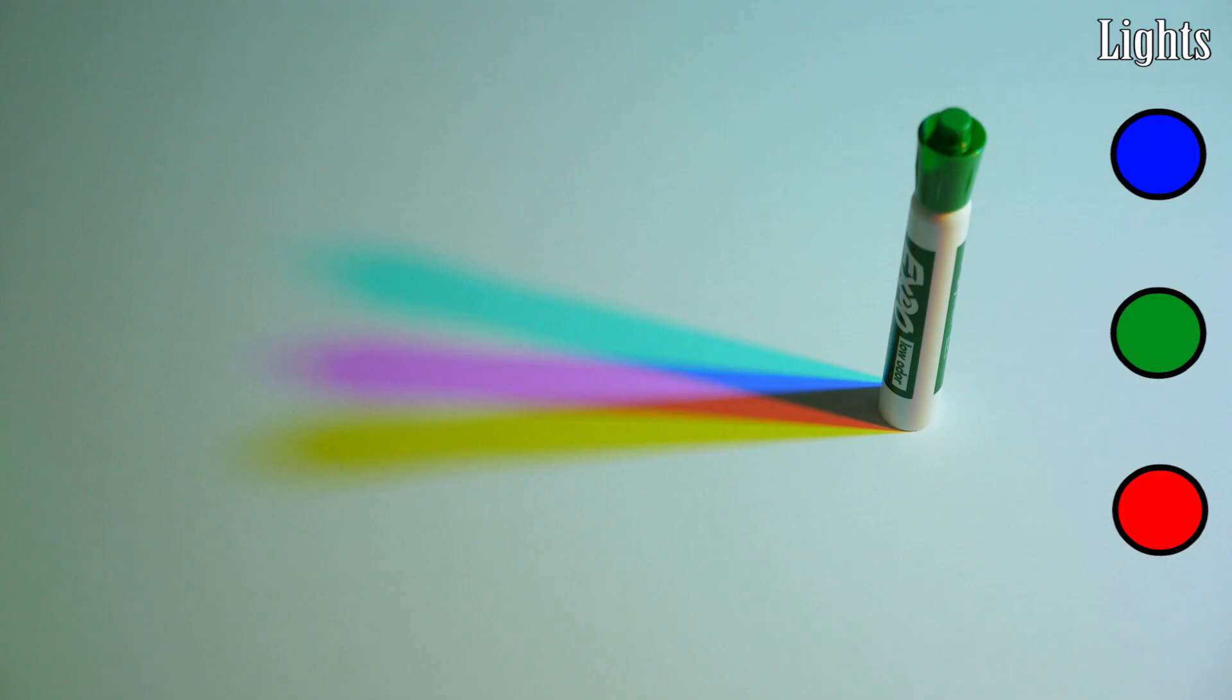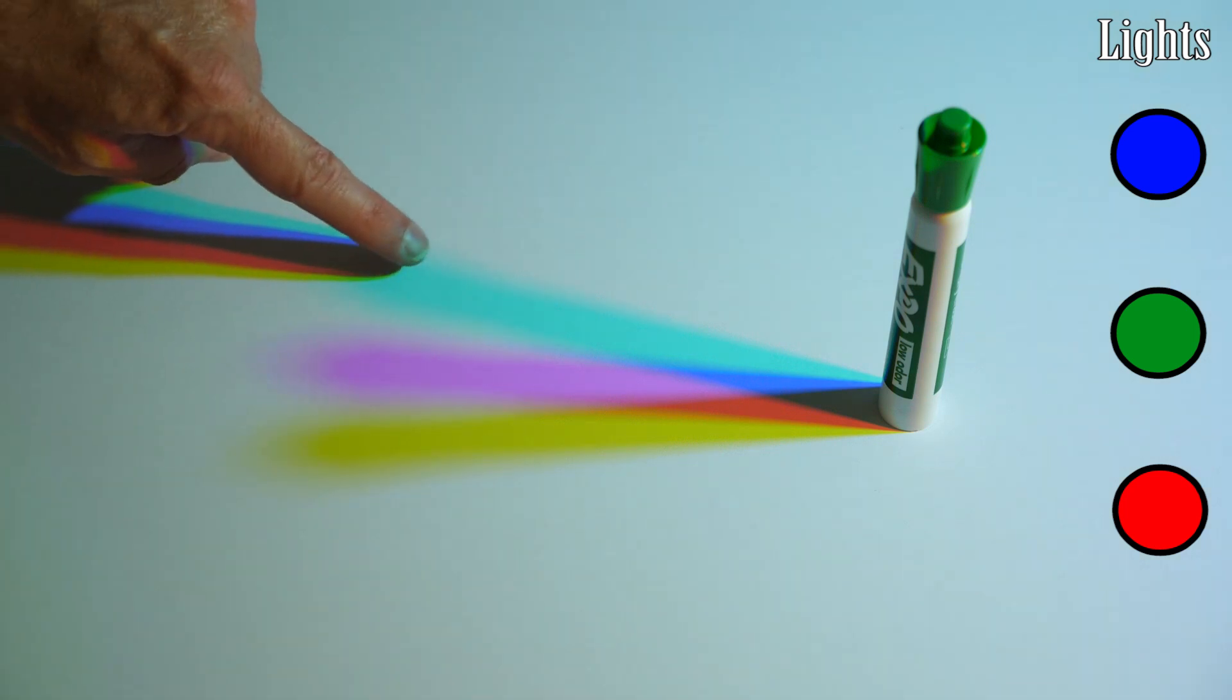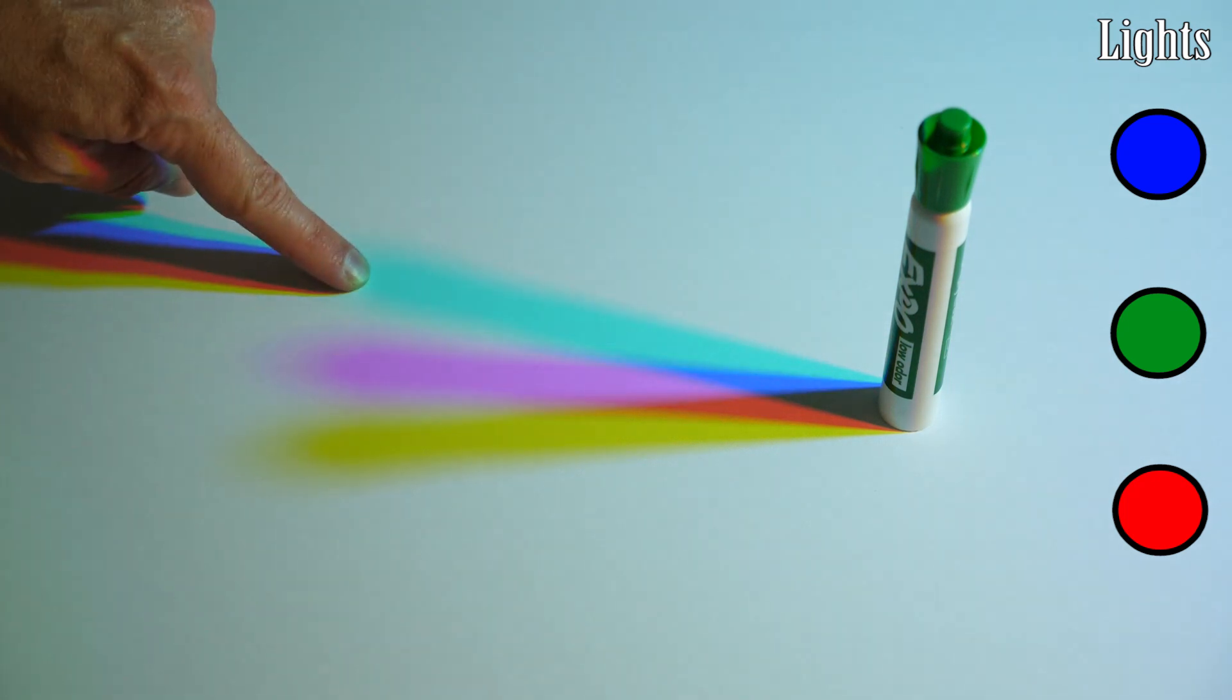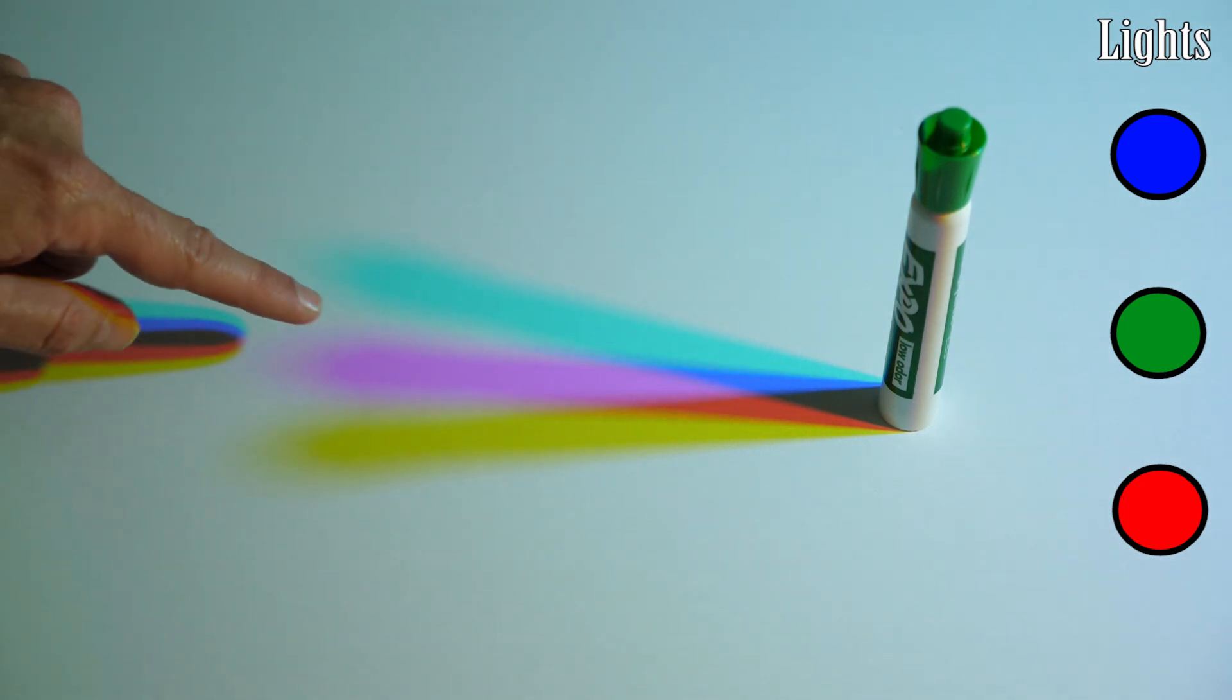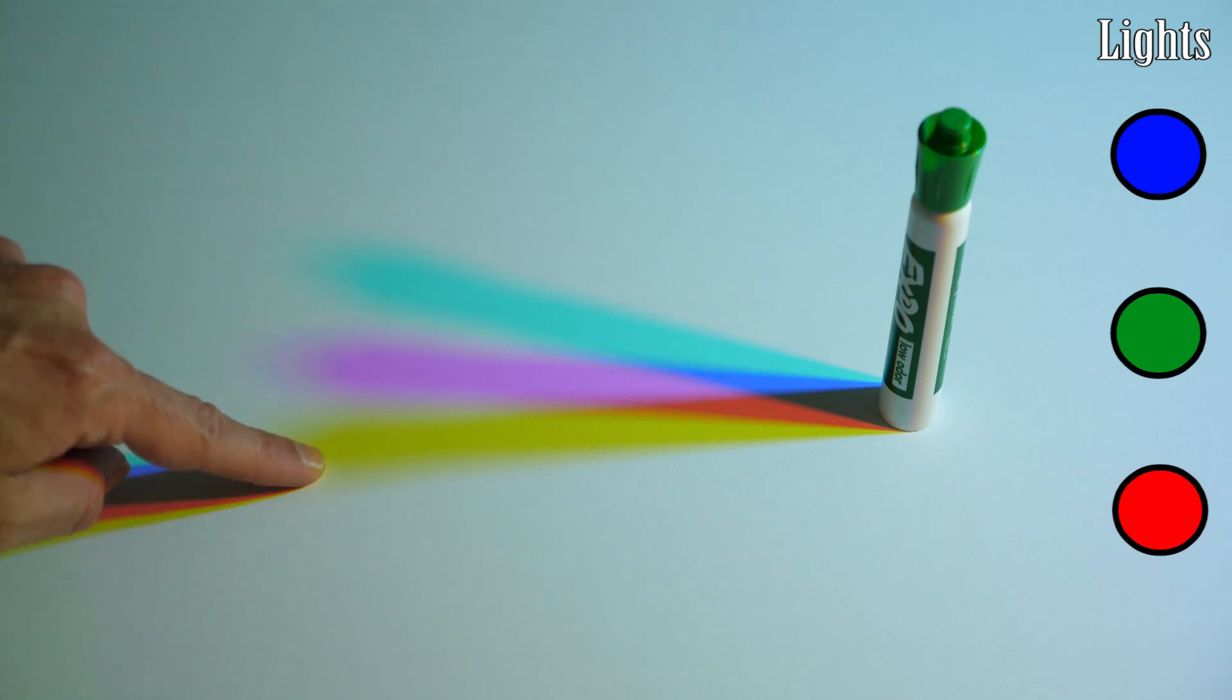Now when you turn on all three lights, all of the colors change. You have cyan, magenta, and yellow. So you can see that cyan is in the location where all of the red light is being blocked. And then you can see the magenta is in the location where all of the green light is being blocked, and the yellow is in the location where all of the blue light is being blocked.